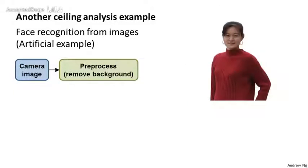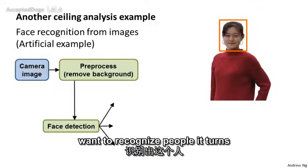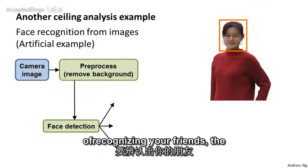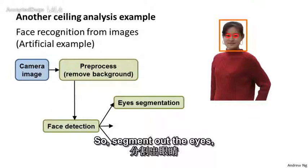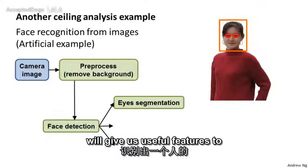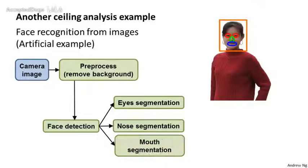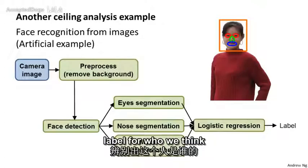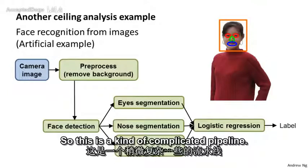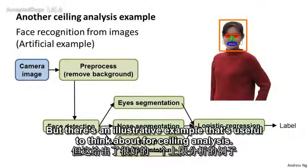The first step is pre-processing the image — for example, removing the background. Next, we detect the face of the person, usually done with a sliding windows classifier to draw a box around the face. Having detected the face, it turns out that eyes are a highly useful cue for recognizing people — the appearance of eyes is one of the most important cues we use. So we run another classifier to detect the eyes, then segment out the nose, segment out the mouth. With the eyes, nose, and mouth found, all of these give us useful features to feed into a logistic regression classifier, which produces the final label for the identity of the person.